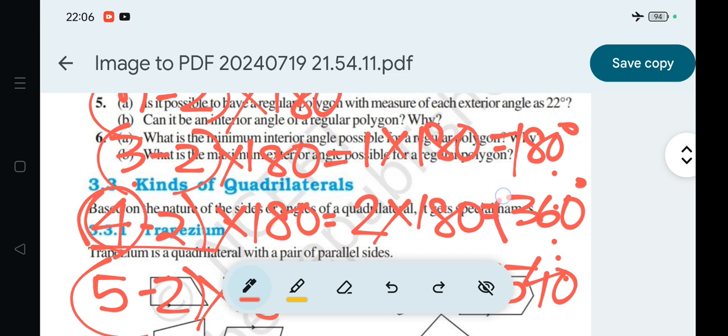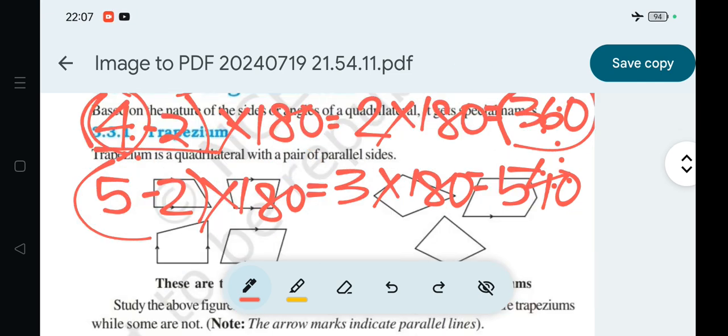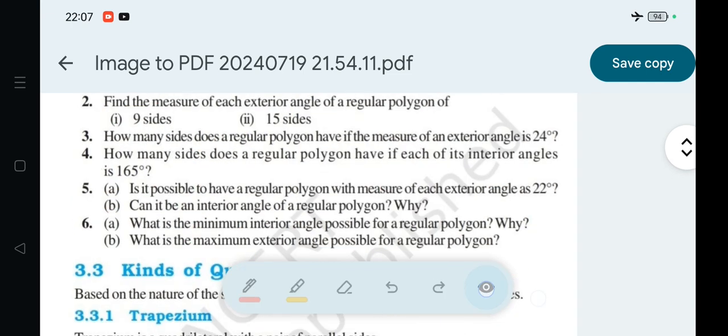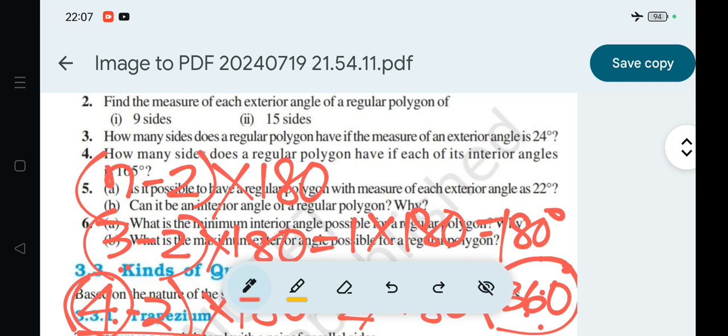Now to minimize the interior angle, we need to consider the polygon with the smallest number of sides. The minimum number of sides would be three, which is a triangle.